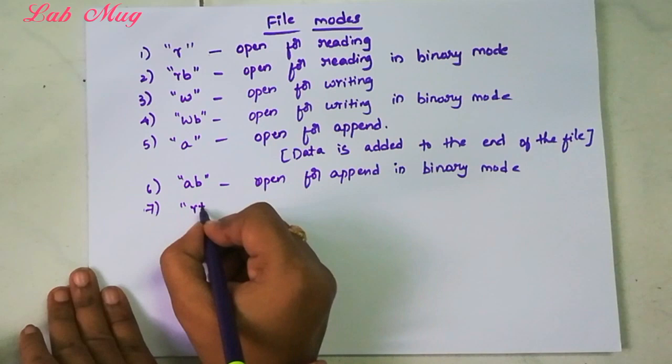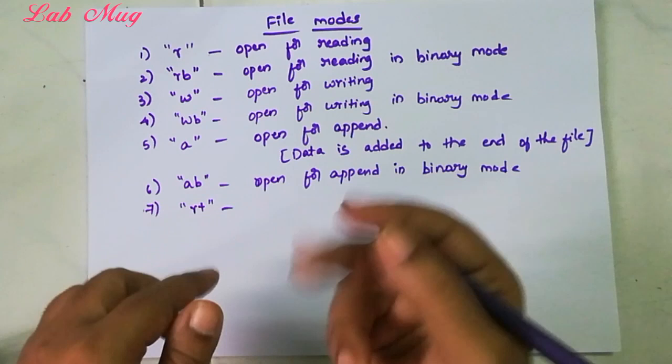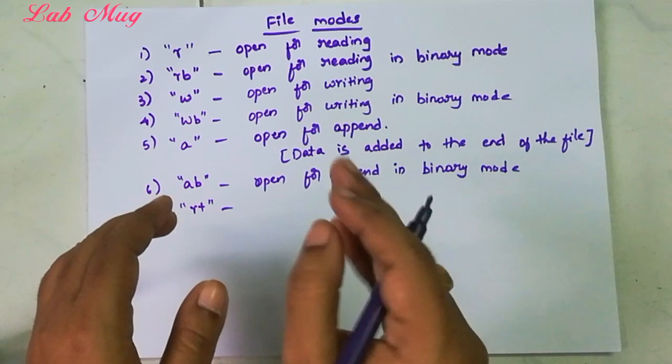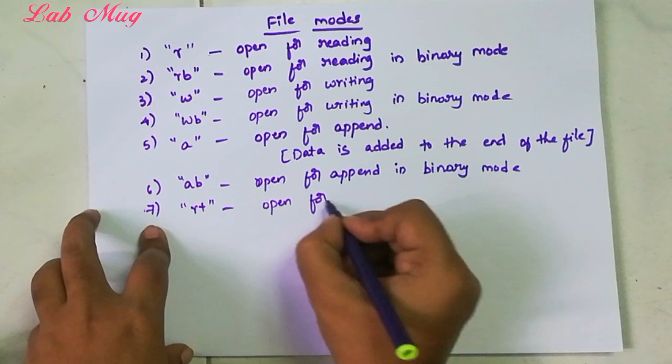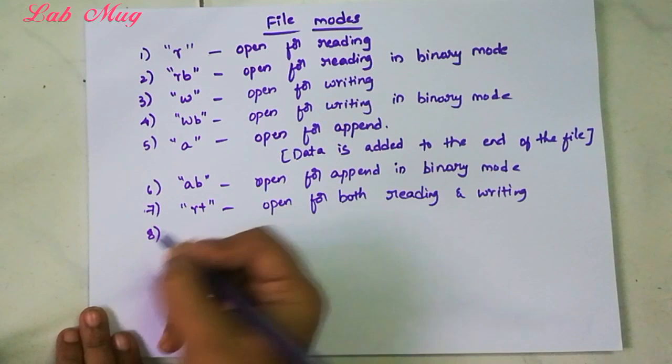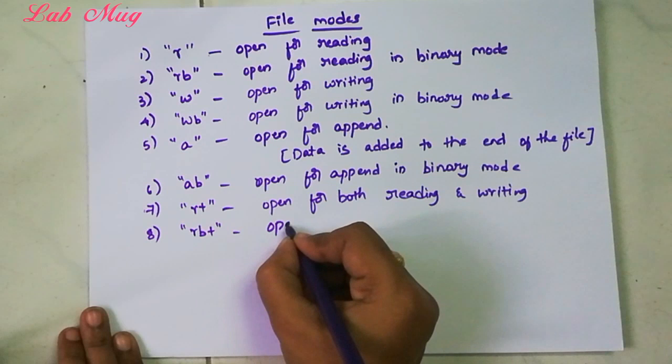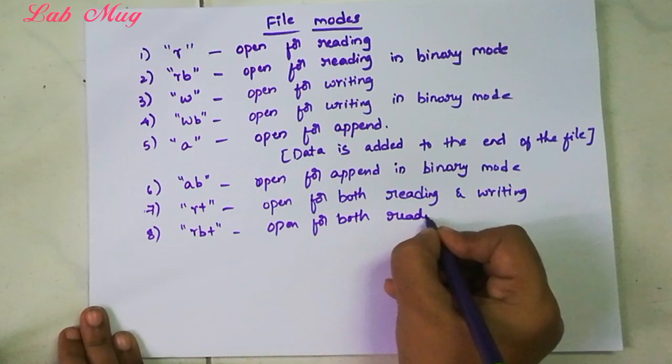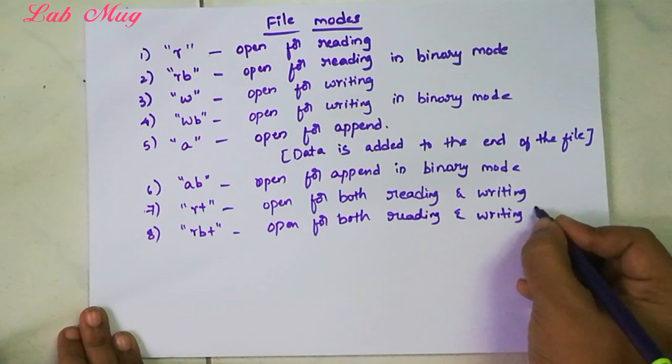Next, from here the code is very very important. R plus. Only R means only reading, but R plus means a little additional, another option. That is open for both reading and writing. Next one, same again in R plus we have RB plus - open for both reading and writing in binary mode.